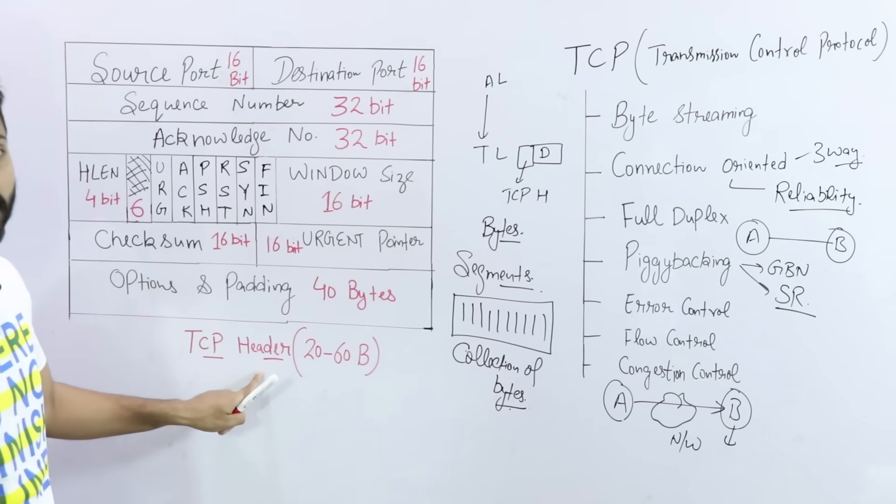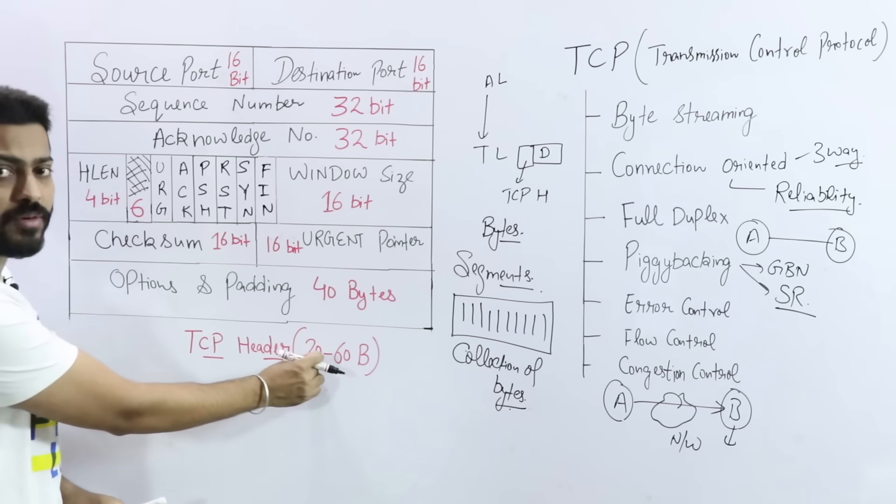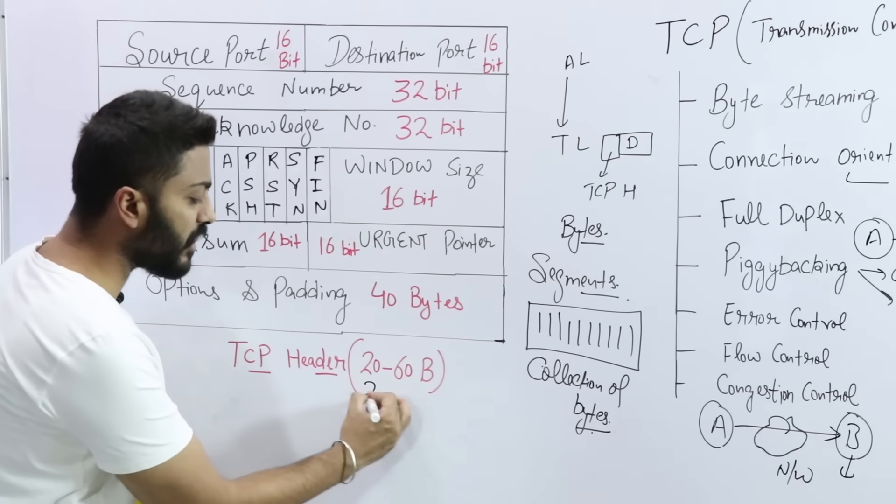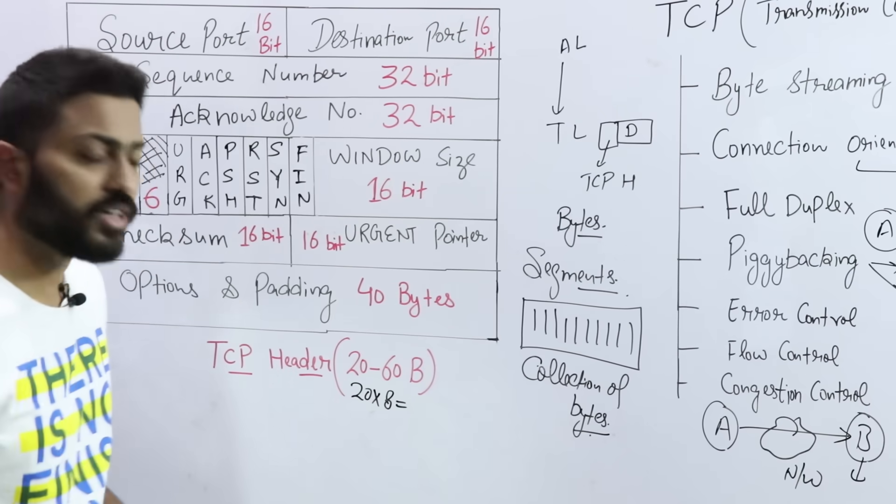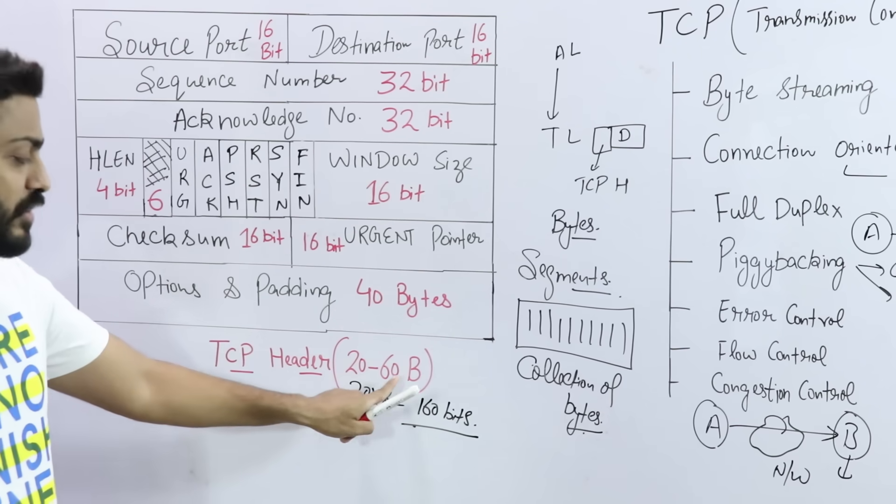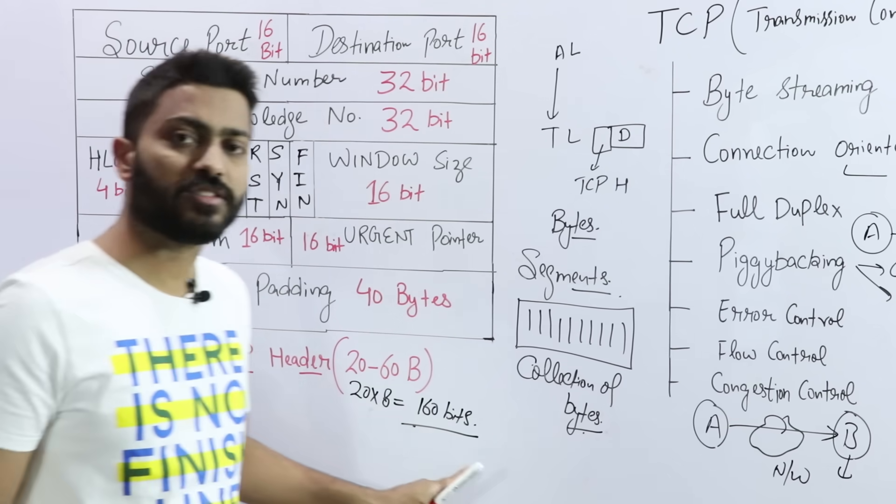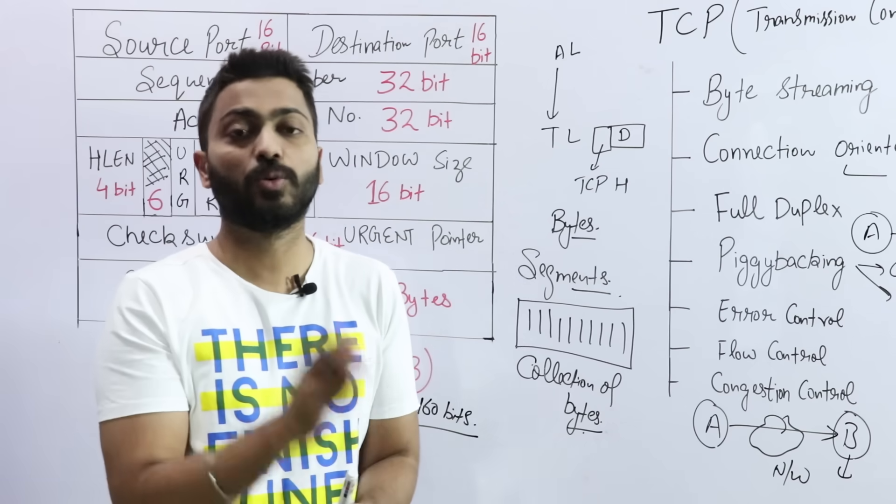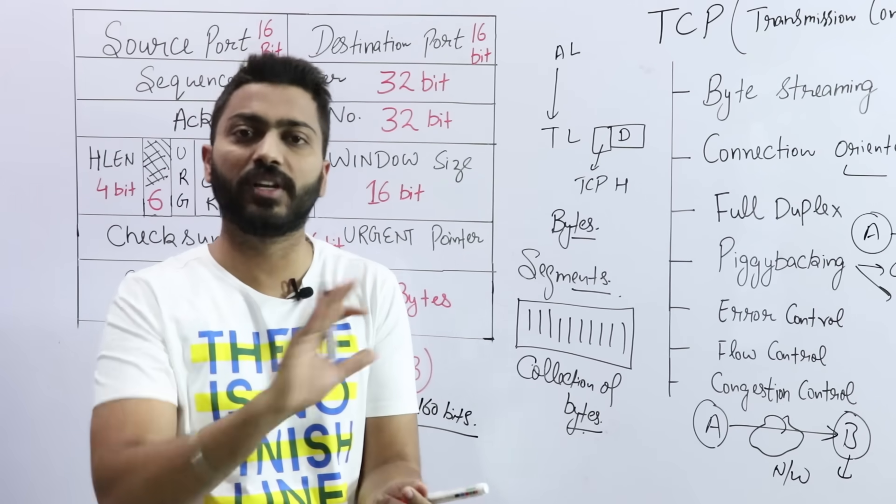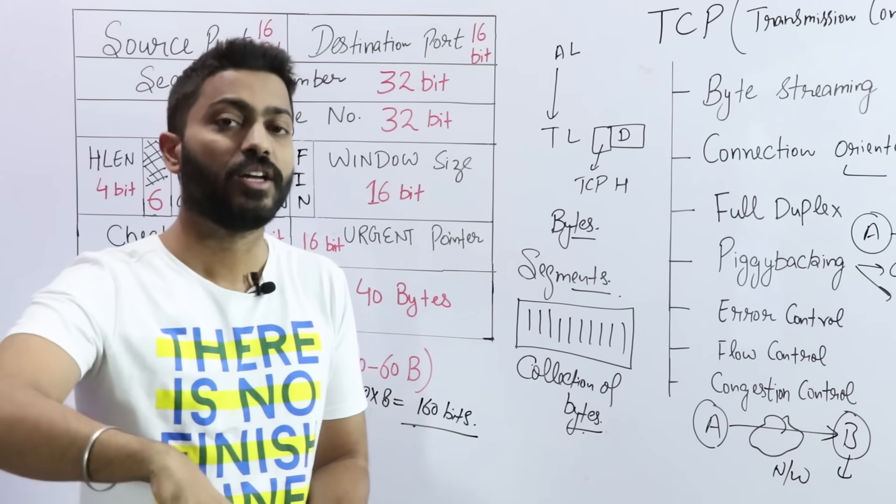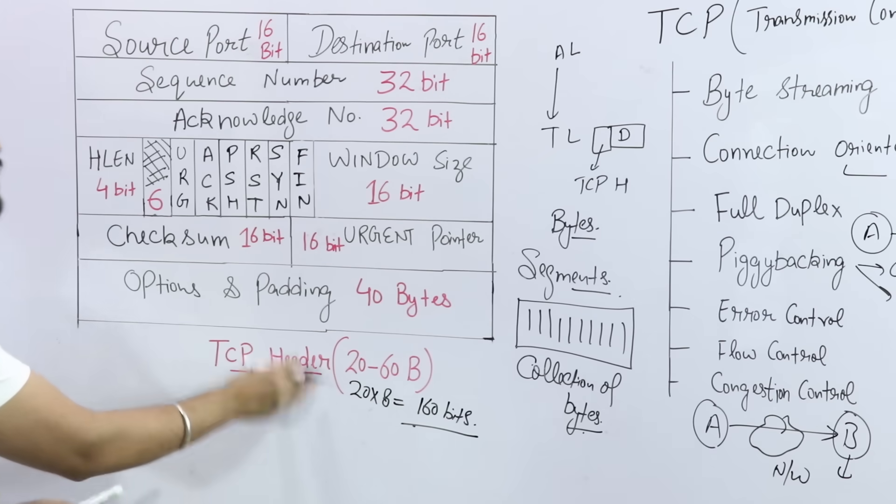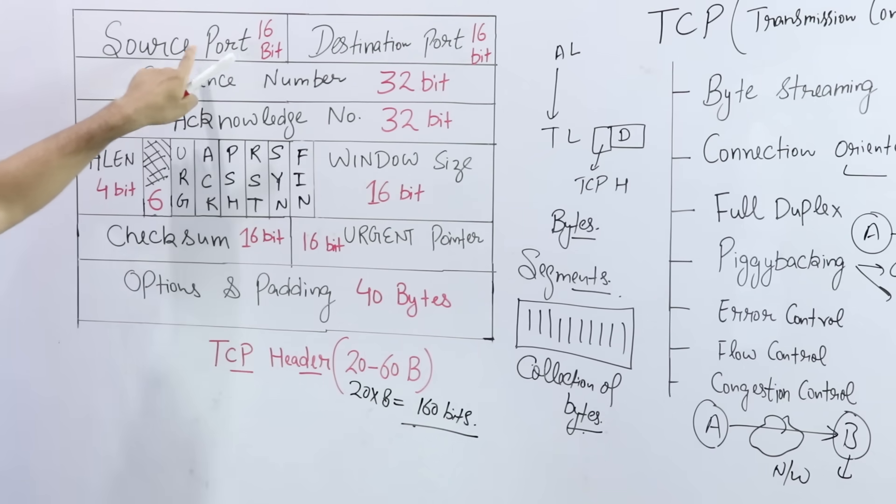Now let's talk about TCP header. TCP header is basically minimum 20 bytes. Maximum it can be 60 bytes. If we talk about 20 bytes, 20 bytes means how many bits? 160 bits. Maximum it can be 60 bytes, but minimum 160 bits or 20 bytes it should be. We cannot send less than 20 bytes header. If header is less than 20 bytes, then it can create a problem. I cannot send less than 20 bytes header.